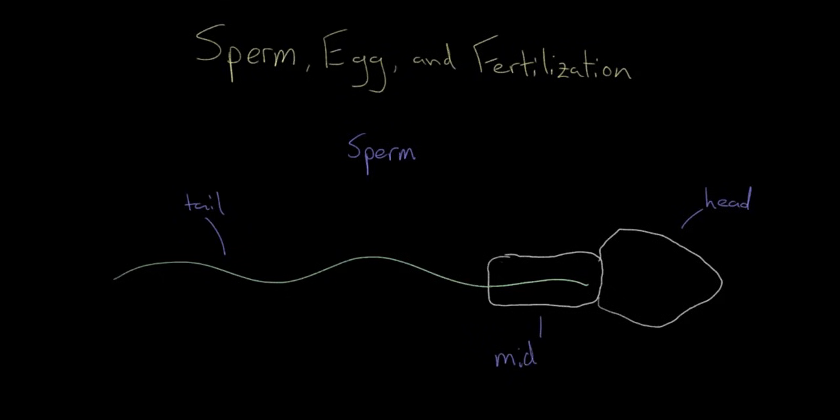And then it has a middle section. Now within that middle section, wrapped around the base of the flagellar tail, are all of these little organelles called mitochondria.